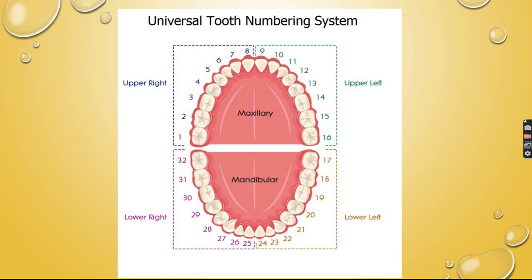The advantage of the Universal tooth numbering system is that a separate number or alphabet is given to each individual tooth, and it is easy to use and fabricate. The disadvantages are that it is confusing when comparing with the Palmer notation system, it cannot be coded by computer, and it is confusing and difficult to remember.